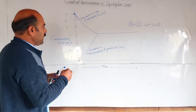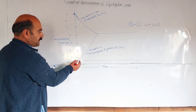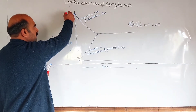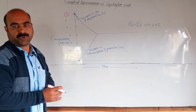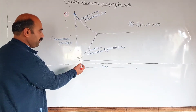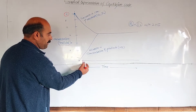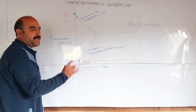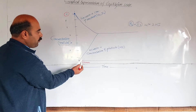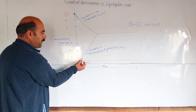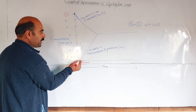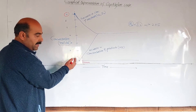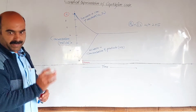Initially, the concentration of products is 0 and reactants is 7 moles per decimetre cube. After 5 minutes, the concentration of the product increases to 1 mole per decimetre cube.